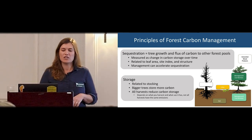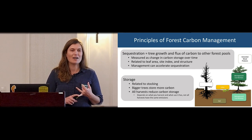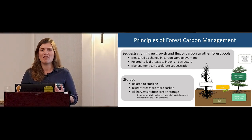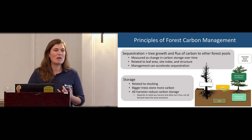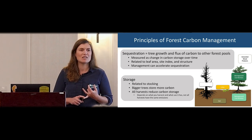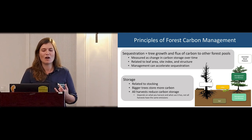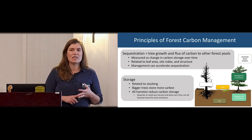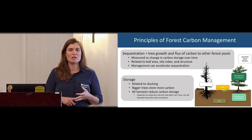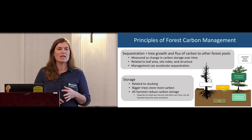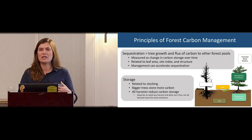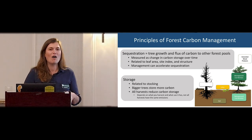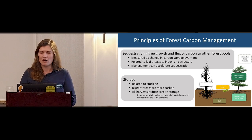And then we have storage. This is really related to stocking — more trees occupying more space means more carbon storage. Bigger trees store more carbon because trees are three-dimensional objects. One thing we have to think about when doing active management is that all harvests reduce carbon storage — we're removing carbon in live trees. It does depend on what we're removing and where it goes, so not all harvests produce the same carbon losses.